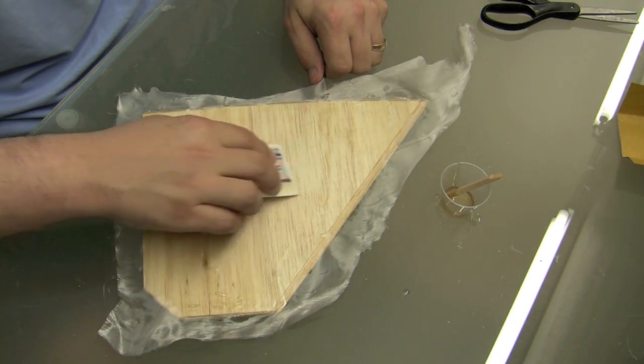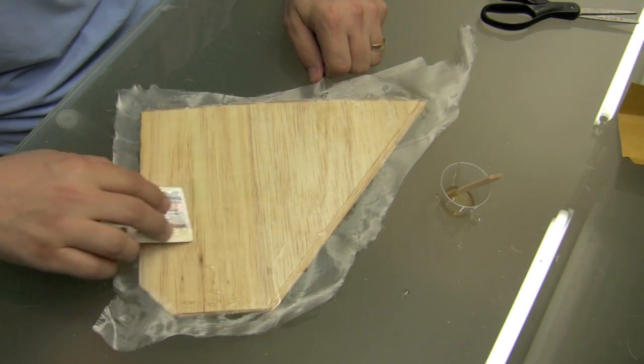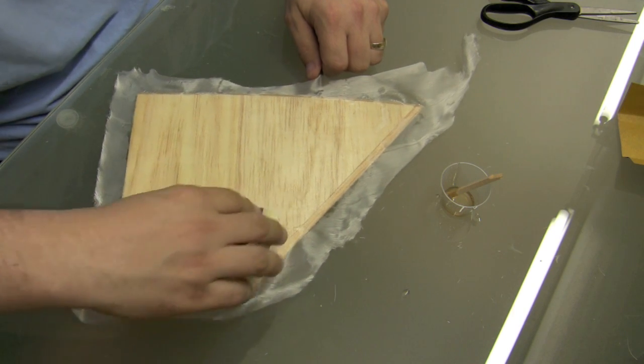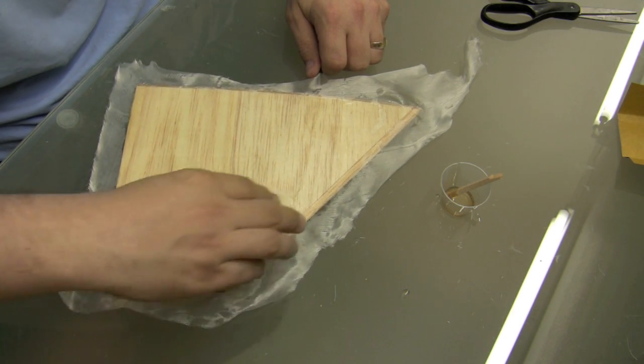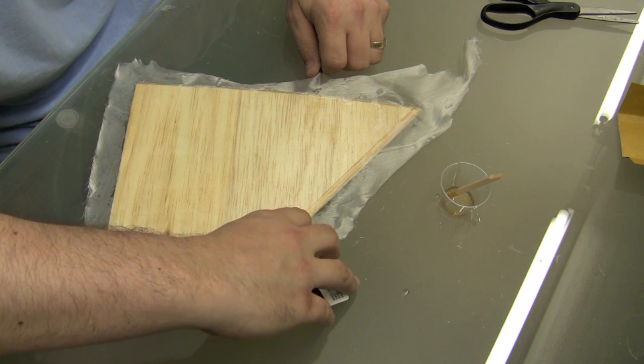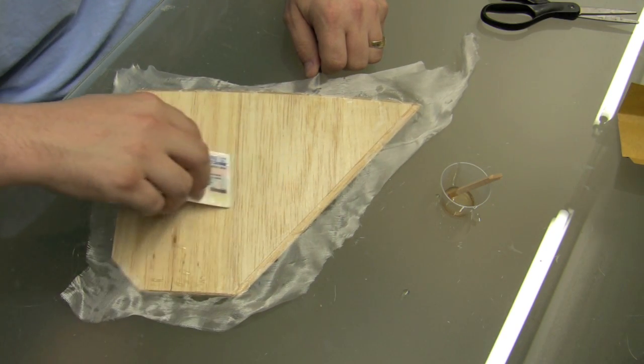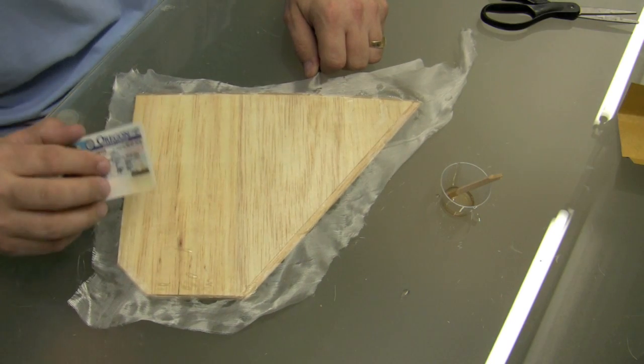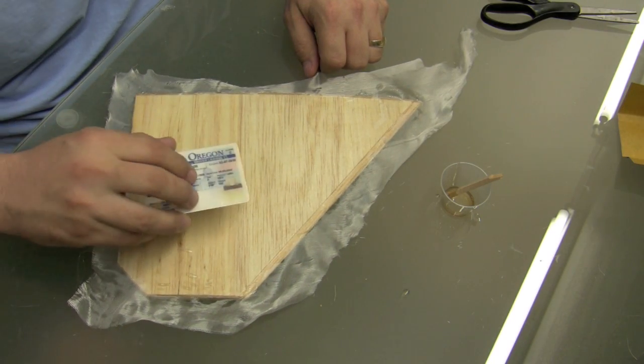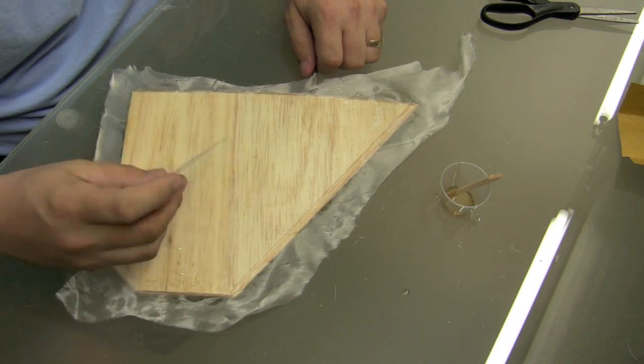One thing though that I did notice, I had a heck of a lot easier time on my wing. I did one side, or I'm sorry, the other vertical stab that I did, I did one side where I only did one coat of the Z-Poxy and sanded it smooth and anyways the weave showed through a lot more.